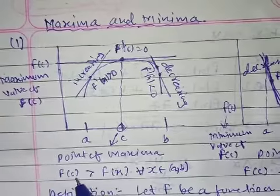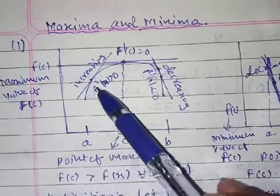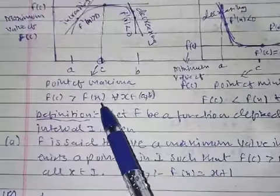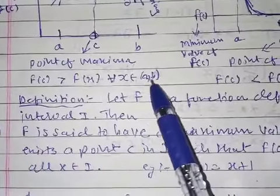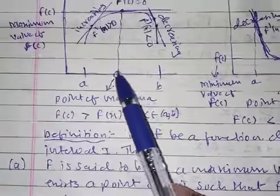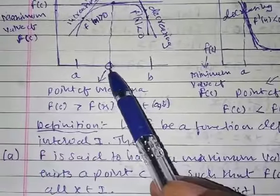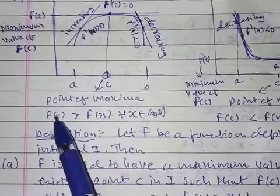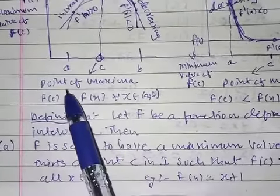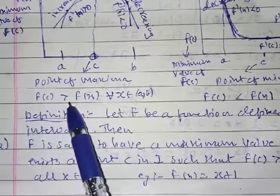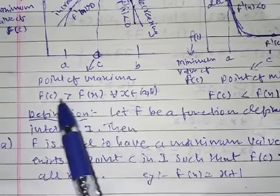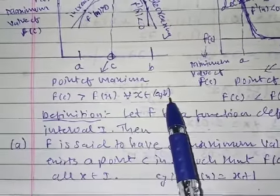The maximum value means f(c) is greater than f(x) for every x. So f(c) is greater than f(x) for every x belonging to the open interval (a, b). This is called a point of maxima. The point of maxima is defined as: f(c) is greater than f(x) for every x belonging to open interval (a, b).